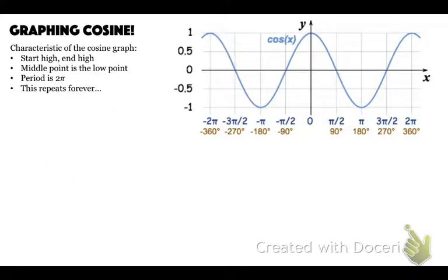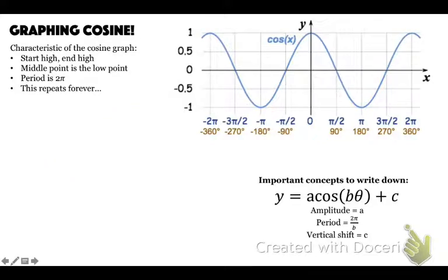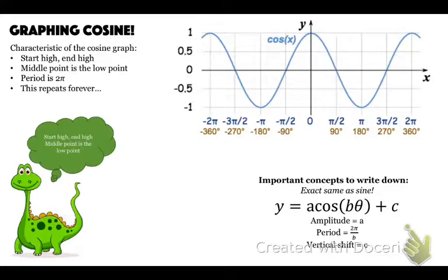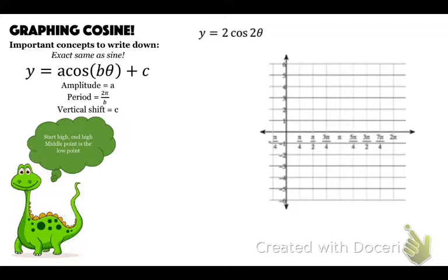y equals a cosine b theta plus c — this is the exact same as sine. Amplitude is a, period is two pi over b, vertical shift is c. We just graph it a little differently: start high, end high, and the middle point is the low point. That's the biggest thing to write down.